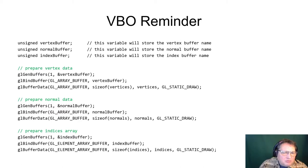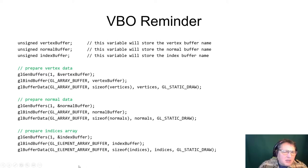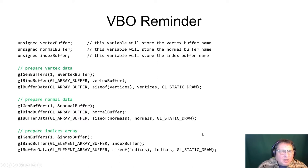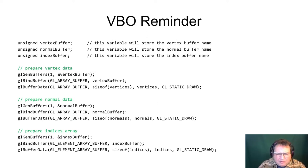We repeat the very similar procedure for the normal data — another three instructions — and for the index data, with one small but significant difference. An index array is a slightly different type of array, so instead of GL_ARRAY_BUFFER we specify GL_ELEMENT_ARRAY_BUFFER, just for OpenGL to know the use of this array is slightly different — these are indices specifying the triangular meshes, not just the vertex data. This is something you do just once during initialization.